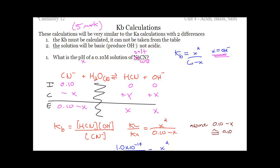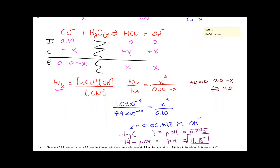We're going to follow it with our KB expression this time — not Ka, KB — where we then have to calculate KB, so there's an extra step here. KB equals KW divided by Ka, which represents CN- as a base, equals X squared over 0.1 minus X (products over reactants). Assume 0.1 minus X is approximately equal to 0.1, and solve.